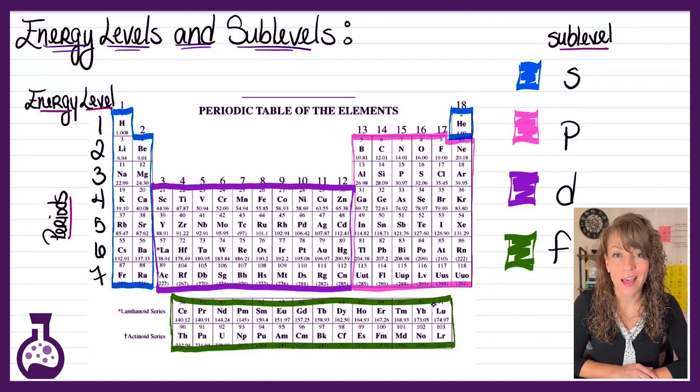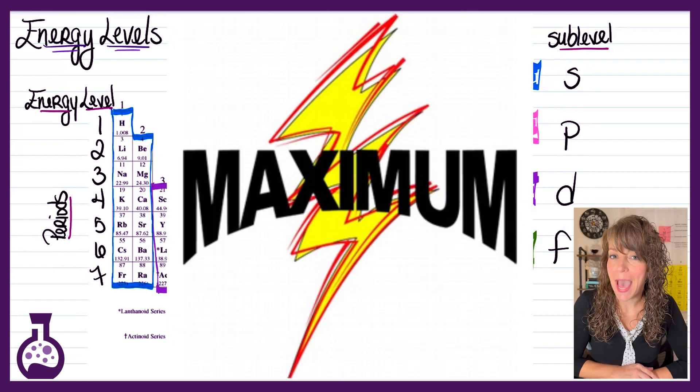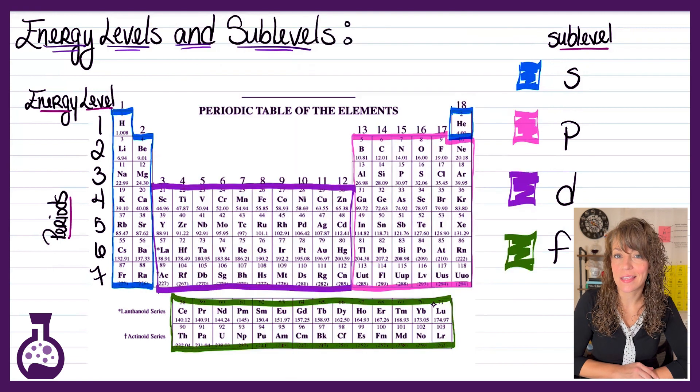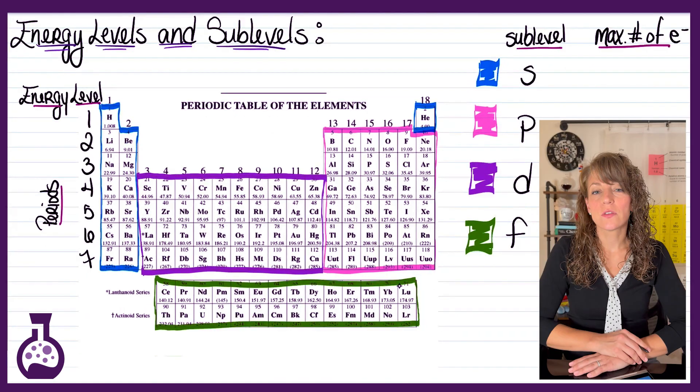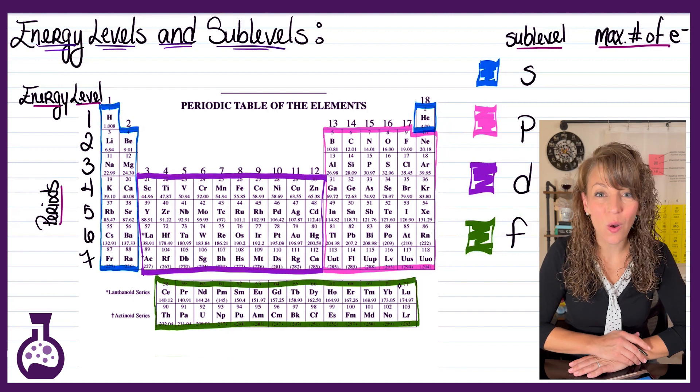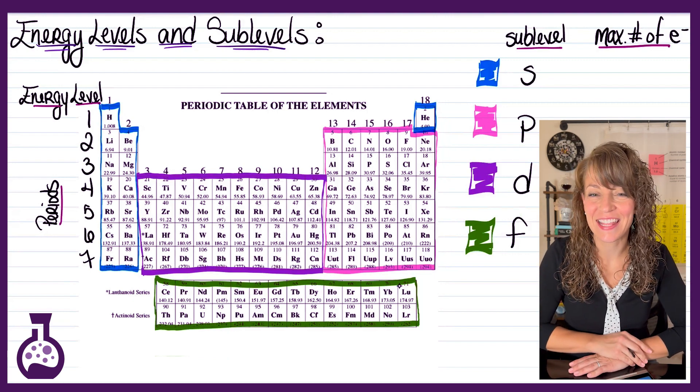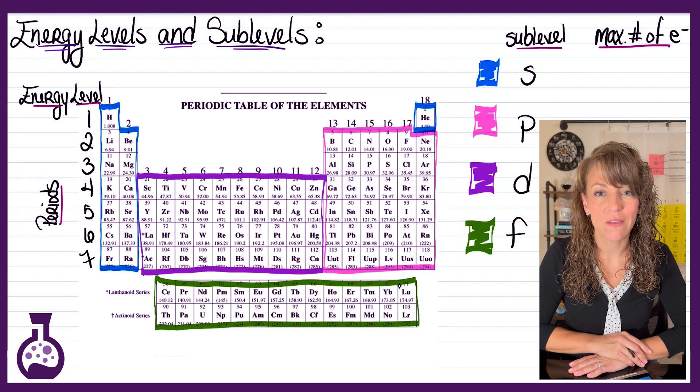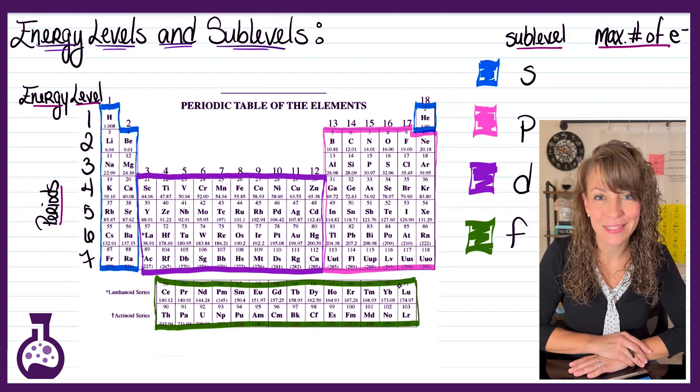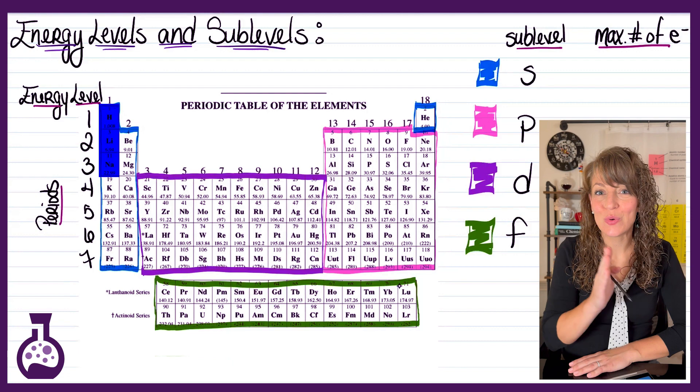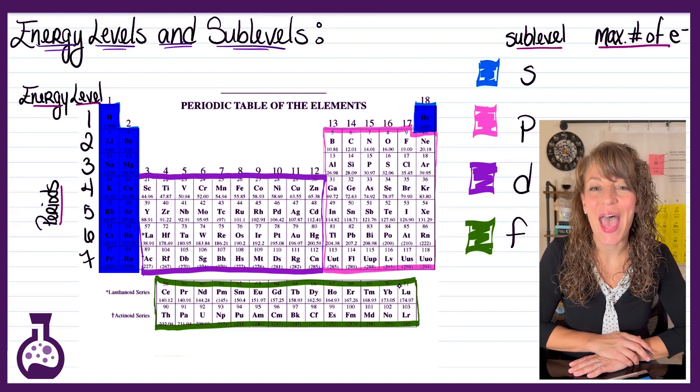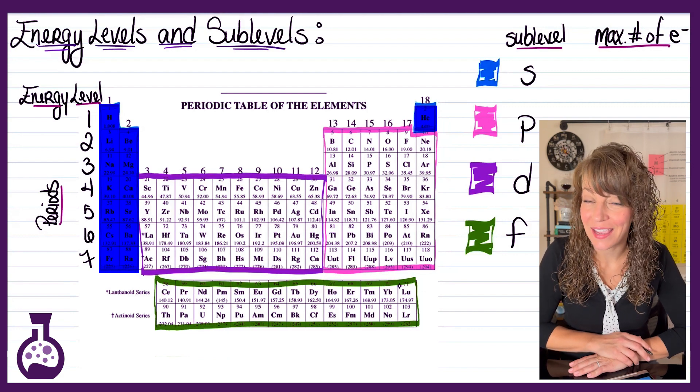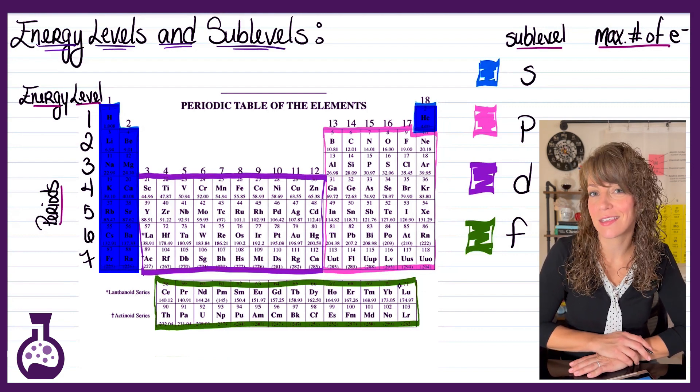Now not only do these blocks on the periodic table tell you the sublevel, but you can also determine the maximum number of electrons held within each sublevel. So for example, your s sublevel can only hold two electrons within that level. So if you take a look at your s block elements, there's two blocks across, or two groups across, within that sublevel, that corresponds to the fact that you can only have two electrons in the s sublevel.